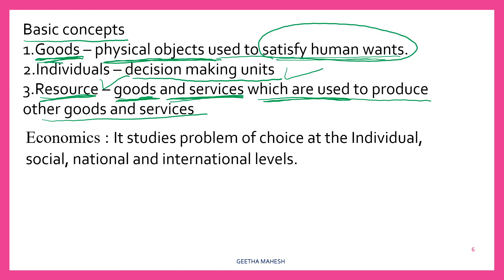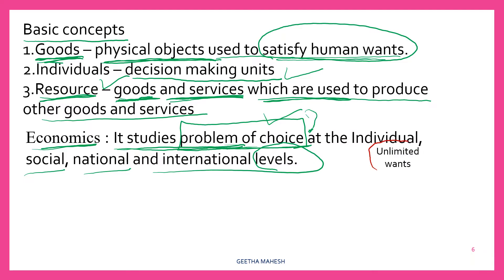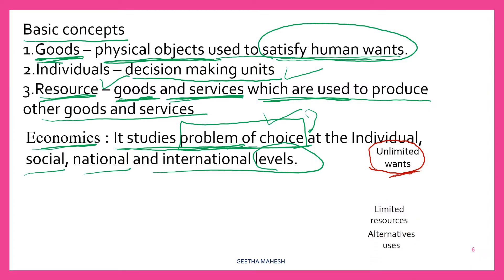Now, what do you mean by economics? Economics refers to the study of the problem of choice. Economics deals with the problem of choice at individual, social, national and international levels. Everyone will have the problem of choice. Why does this problem of choice arise? First, human wants are unlimited. Second, to satisfy these unlimited wants, we have resources and these resources are limited.